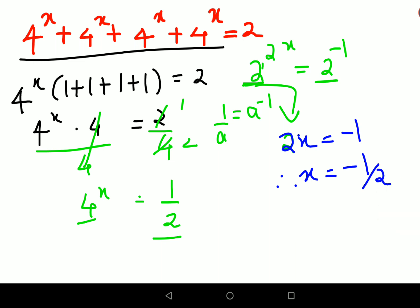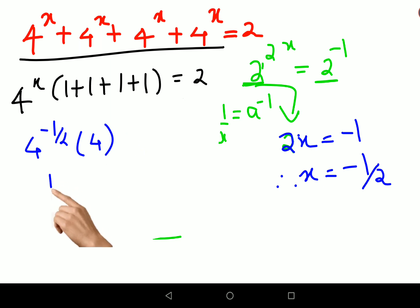So now if you want let's try and substitute it over here. So what we will do is instead of 4 raised to x we will write 4 raised to minus half. Now 4 raised to minus half can be written as 1 upon, half is nothing but root of 4, this is into 4.